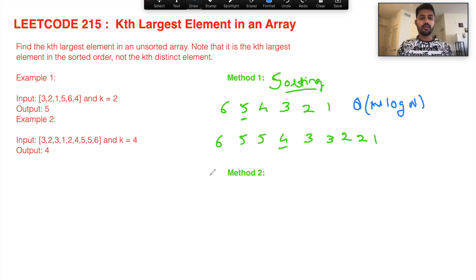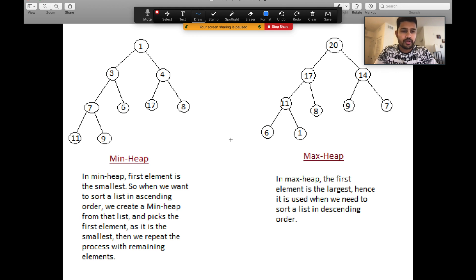To explain the second method, I would like to explain a concept called priority queue. There are two types of priority queues: min heap and max heap. Let's go over a couple of examples.